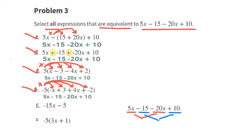Option E: Let's combine like terms of the original expression. 5x minus 20x is negative 15x, and negative 15 plus 10 — that's the same as 10 minus 15 — which is negative 5. This expression is equivalent to negative 15x minus 5, so it is equivalent to the original expression.